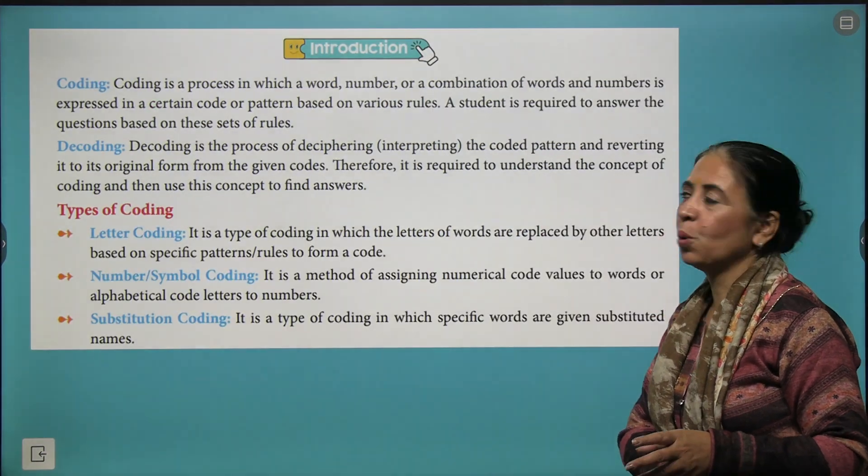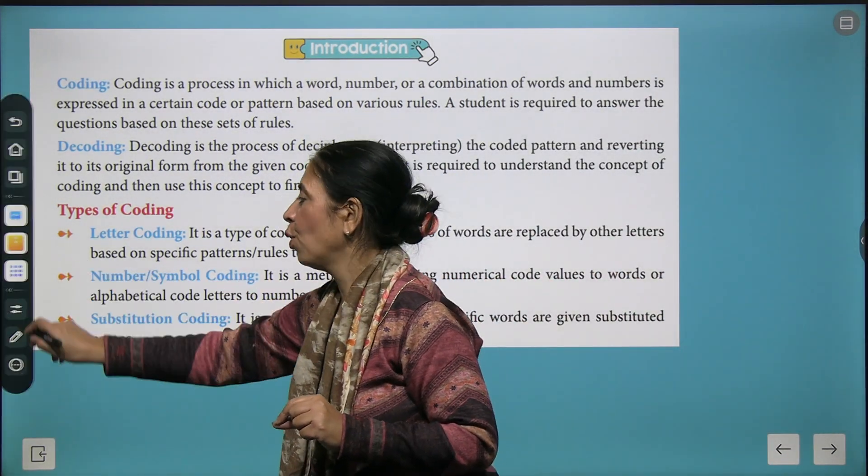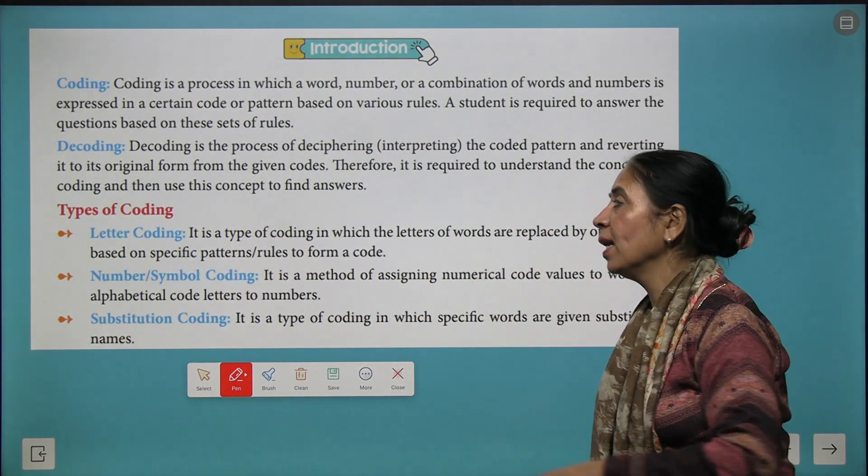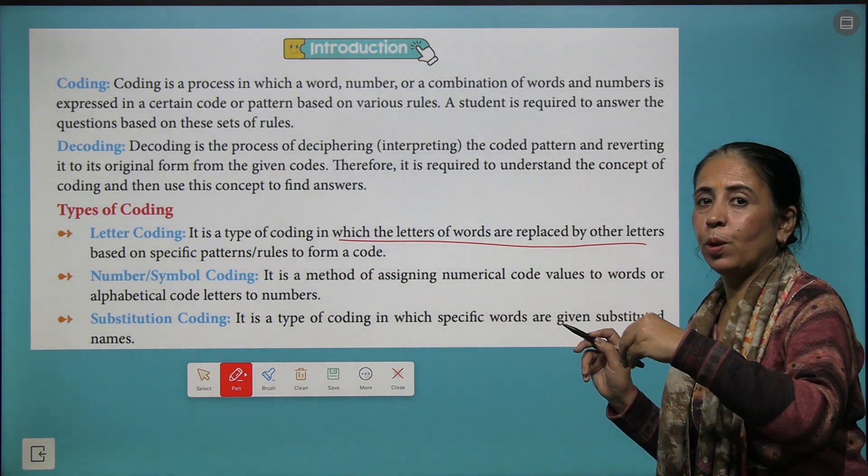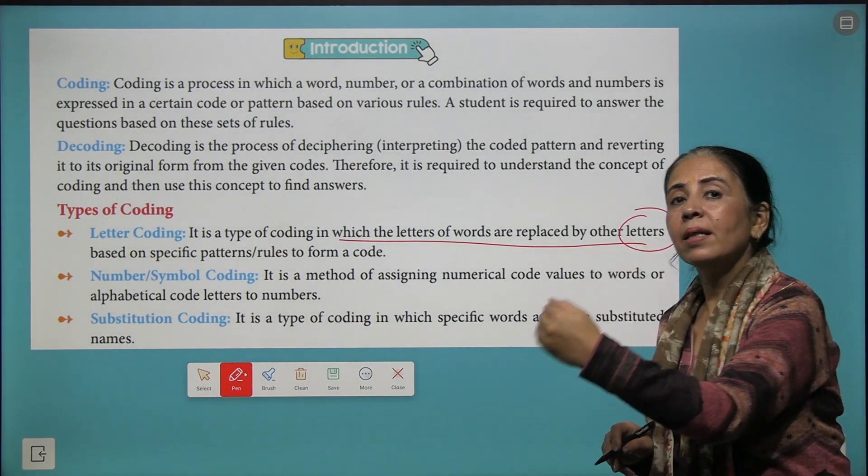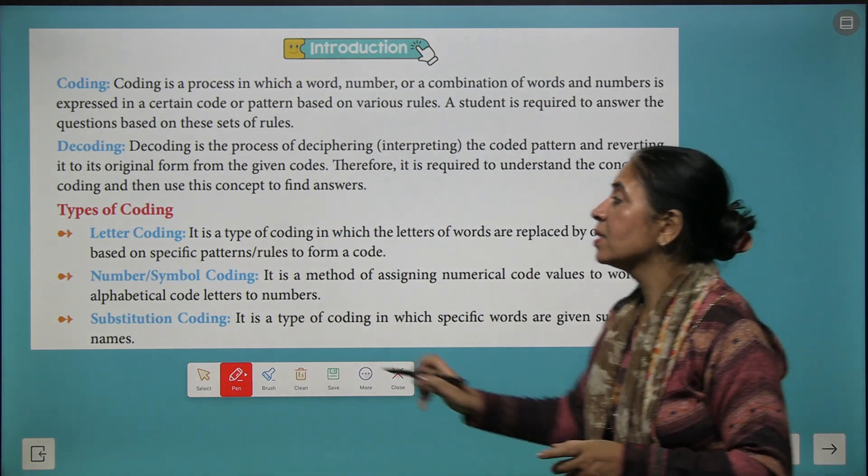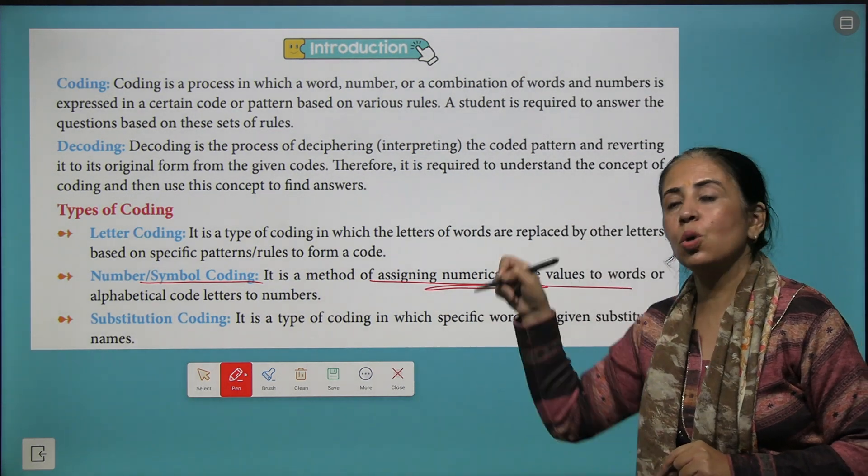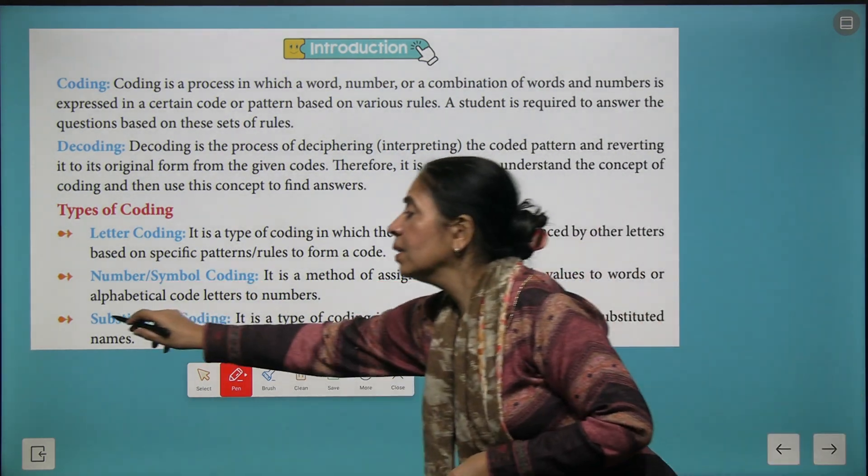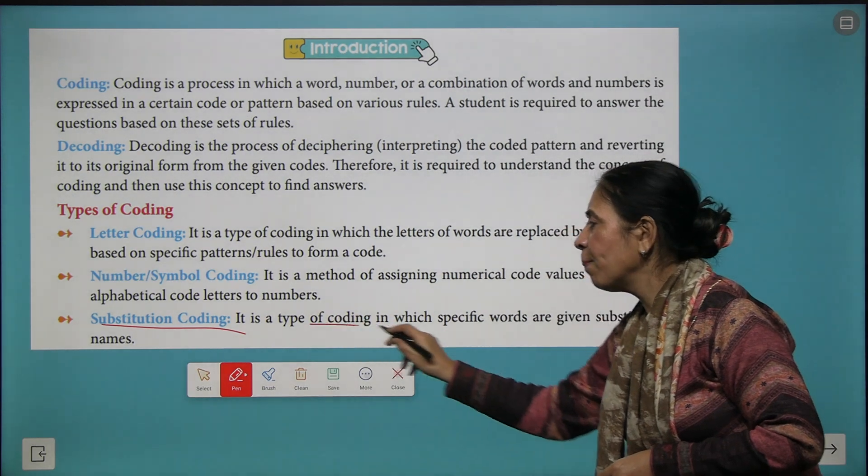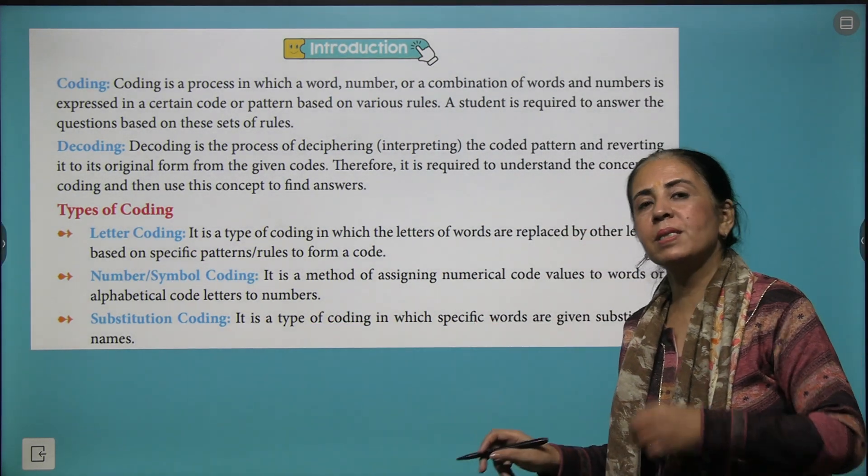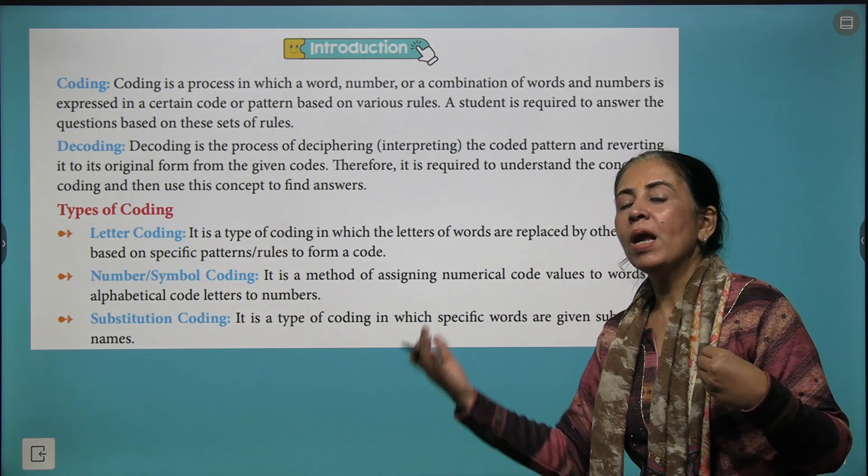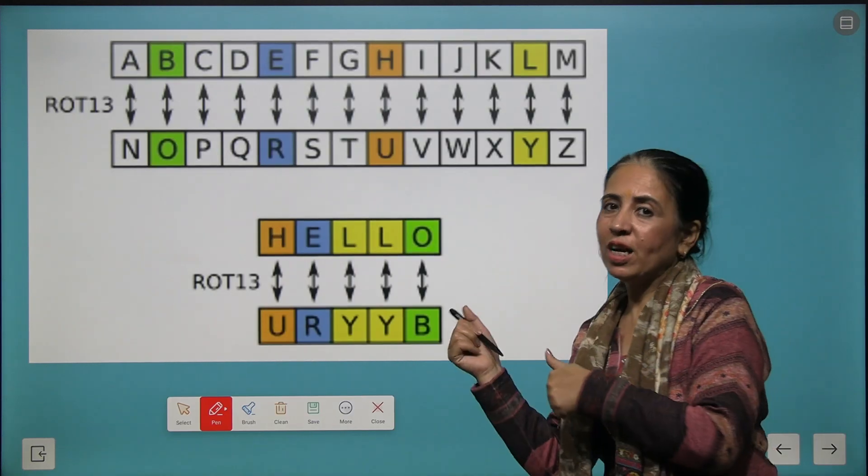Now we talk about the different categories of coding. Basically, letter coding is one type in which the letters of a particular word are replaced with other letters following specific rules. Next is number-symbol coding, where we assign numerical code values to words or alphabet letters to numbers. The third is substitution coding, where specific words are given substitute names used to decode the pattern and create new codes.